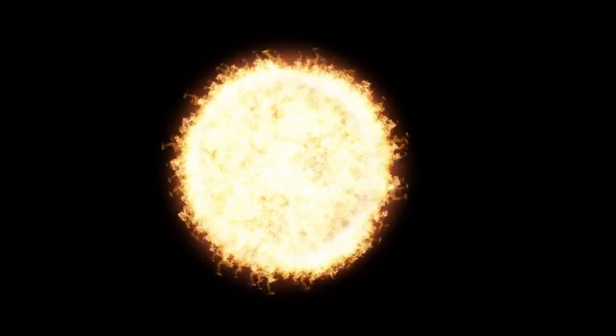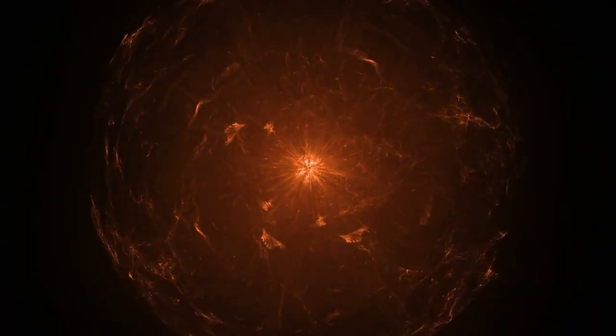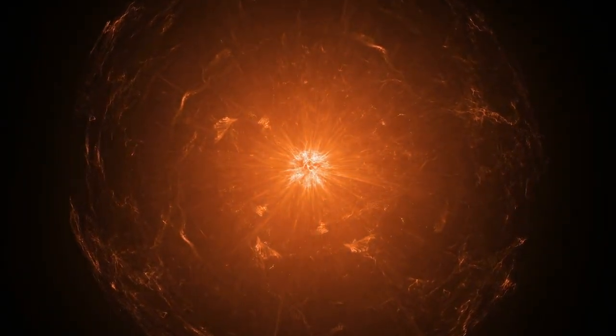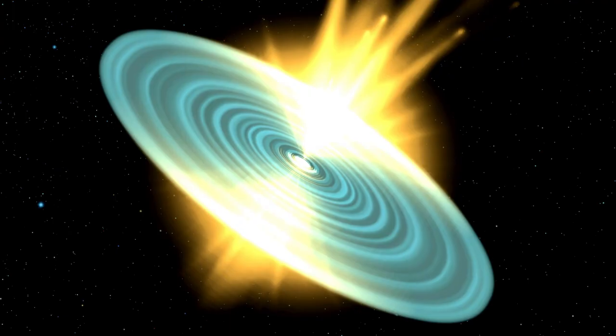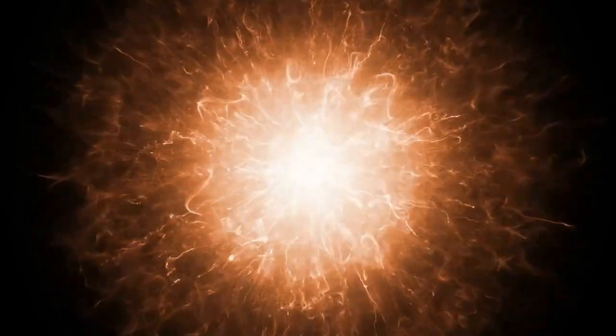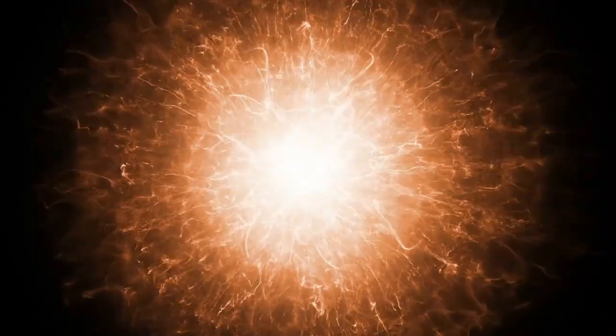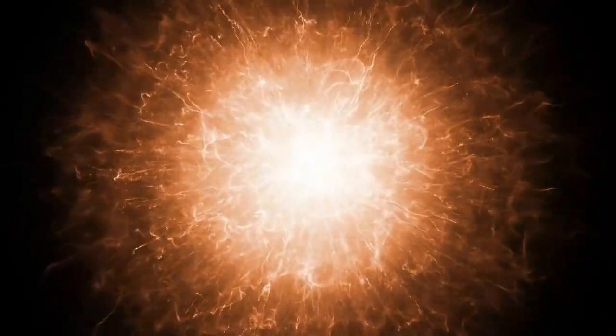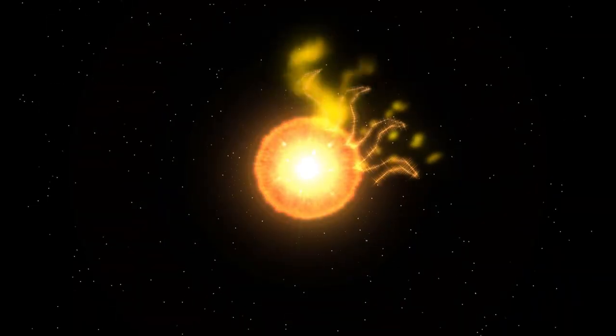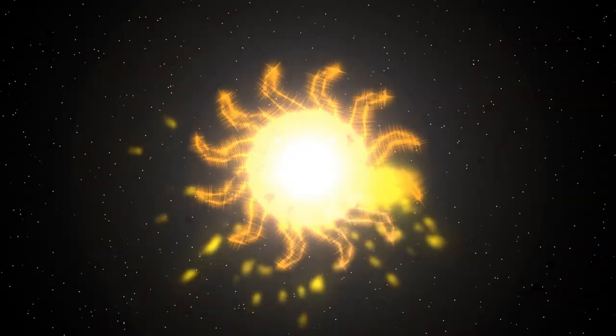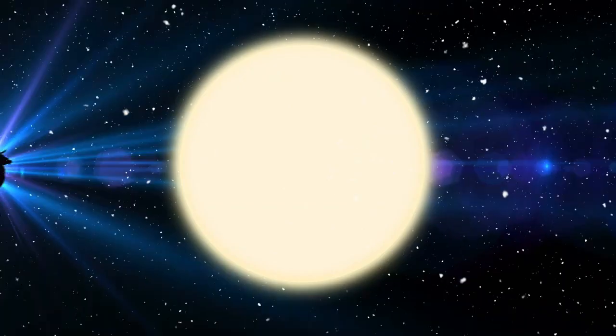Betelgeuse has been considered a supernova candidate for years, with some predicting it could erupt in the next 100,000 years. The recent surge in energy now raises the possibility that this timeline might be shorter than previously thought. The star's recent erratic behavior, when combined with this sharp brightening, suggests it may be entering a more unstable phase, possibly one that precedes a supernova.